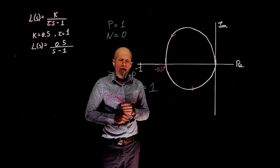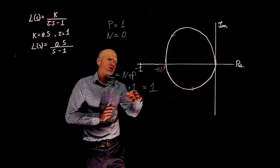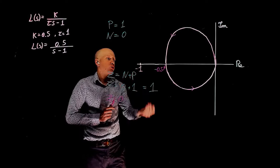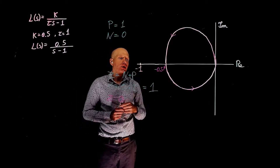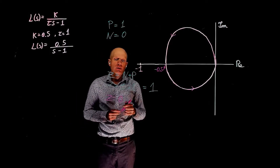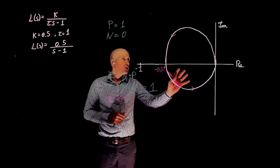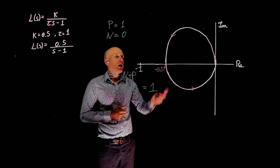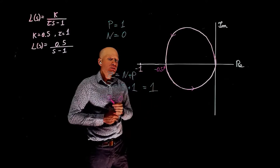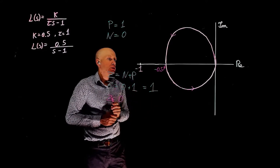How do we make N equal negative 1? We know that for every clockwise encirclement of negative 1, N equals 1, and for every counter-clockwise encirclement, N equals negative 1. So if this Nyquist plot encircles negative 1 one time in the counter-clockwise direction, N is negative 1, and negative 1 plus 1 is 0 — the system will be stable.